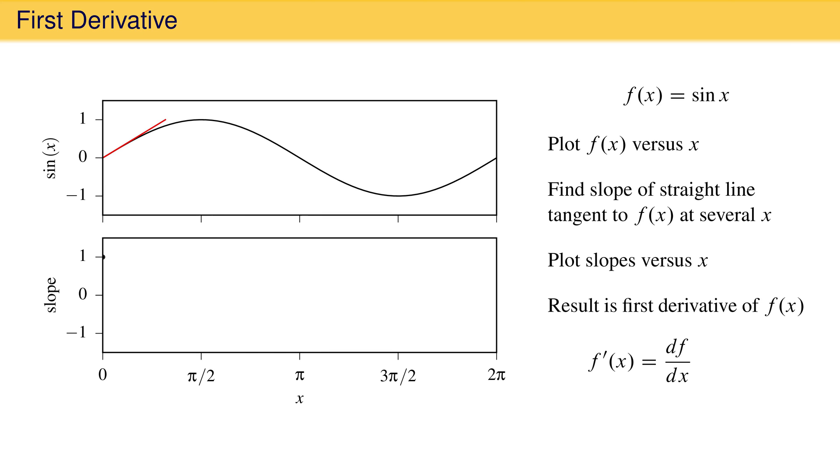Next we begin drawing straight lines tangent to sin x at different values of x and recording the slope of each. Note that at π/2 the slope is zero. Continuing to the right the slope becomes negative, reaching its most negative value at π, after which the slope becomes less negative, going back to zero at 3π/2, before becoming positive again.